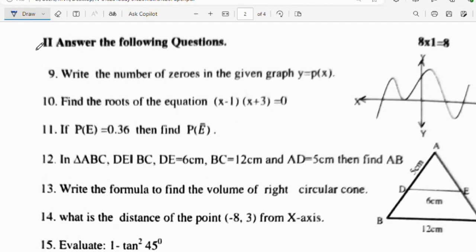Second main question: Answer the following, 8 questions will be there. Question number 9: Write the number of zeros in the given graph y is equal to p of x. Zeros means it should touch the x axis. 1, 2, 3, 4. The zeros of the given graph is 4, the right answer.